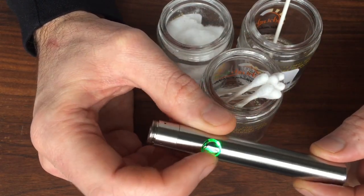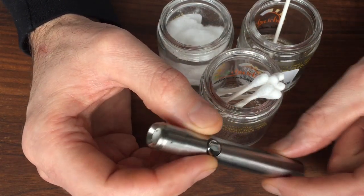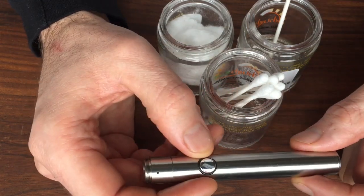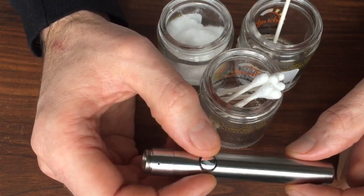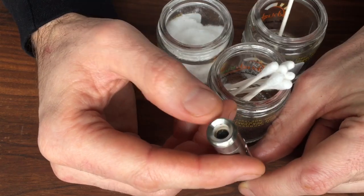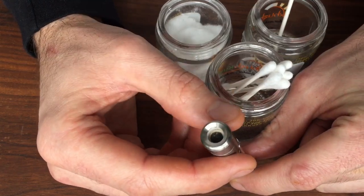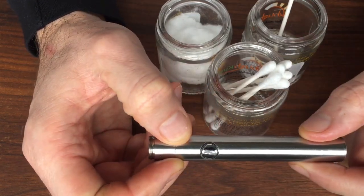When it starts to get dirty, you'll notice that you'll need it on the yellow to get a strong hit. If you need to have it on a higher temperature to get a good hit, most likely your bowl is dirty and it's time to clean it.